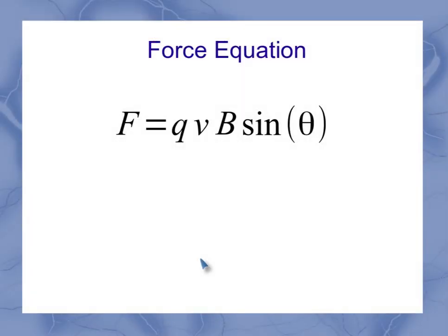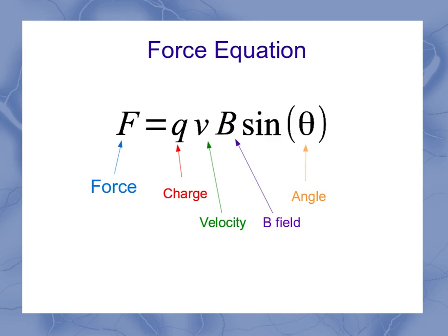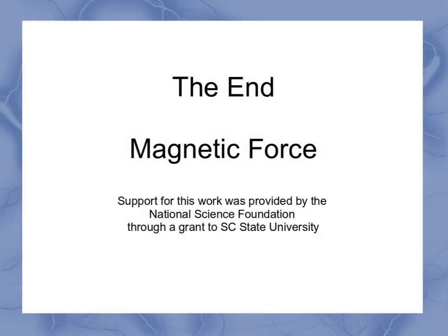So in terms of my overall equation then, I end up with my charge matters, my velocity matters, my magnetic field matters, and the angle matters in the sense that I'm going to have the sine. So my force is equal to the charge times the velocity times the magnetic B field times the sine of the angle. So that's my equation I'm going to be using for the magnetic force.